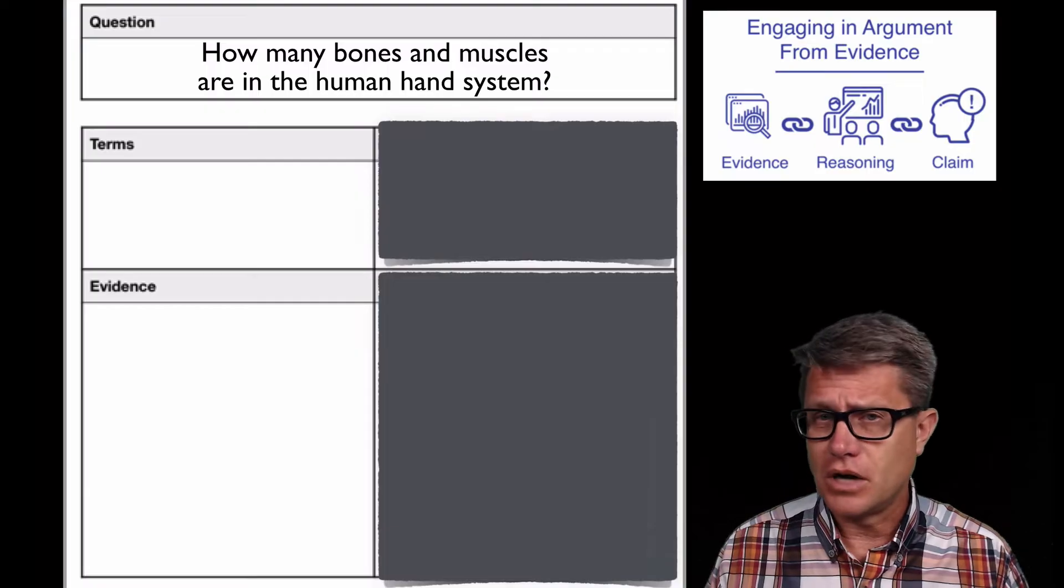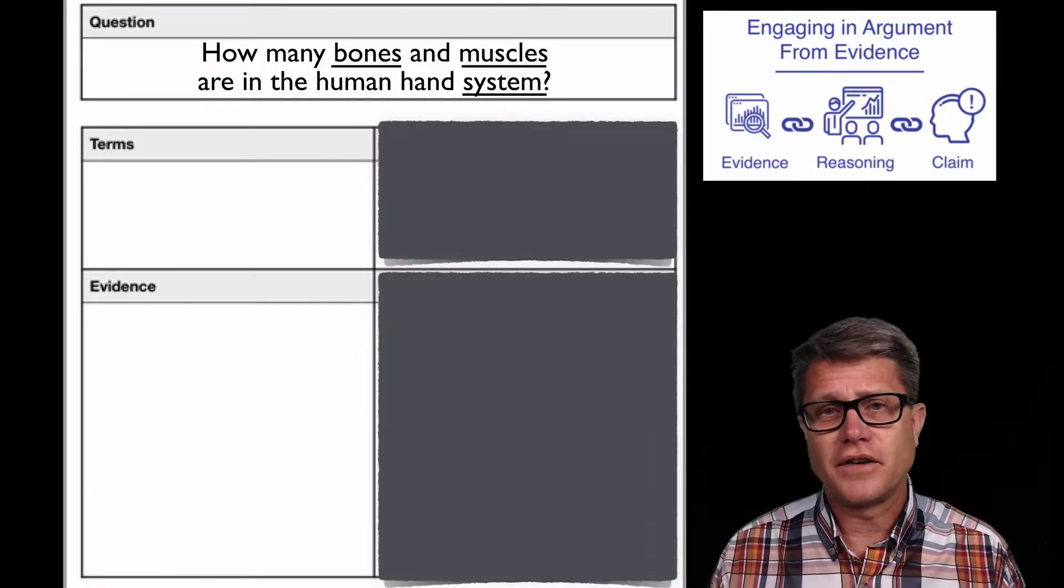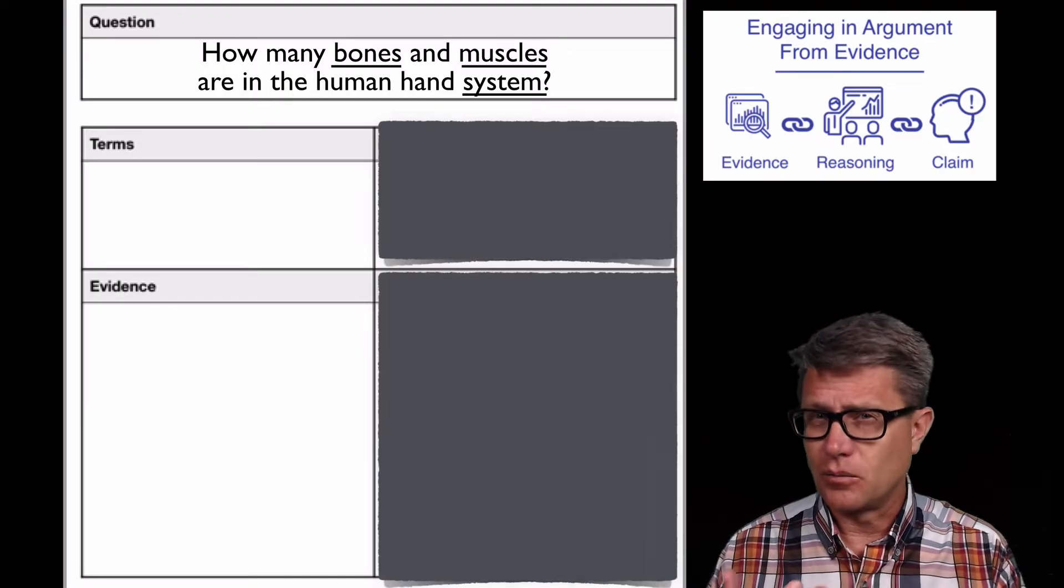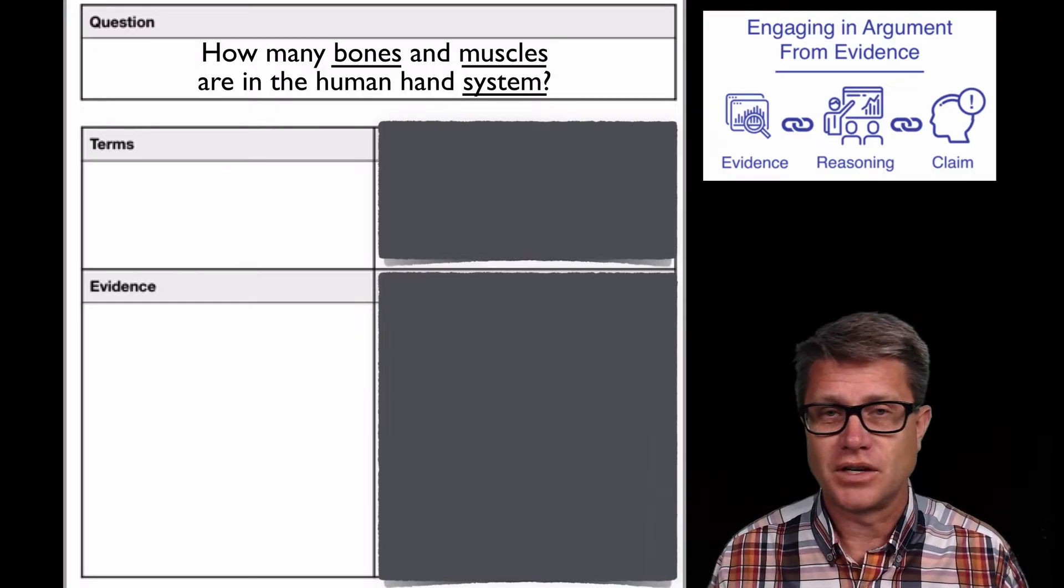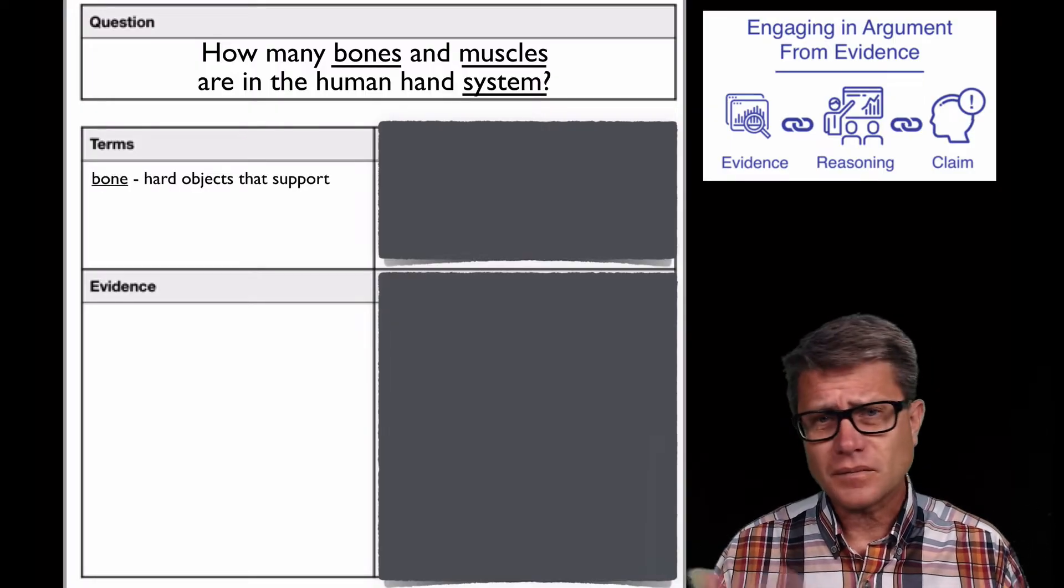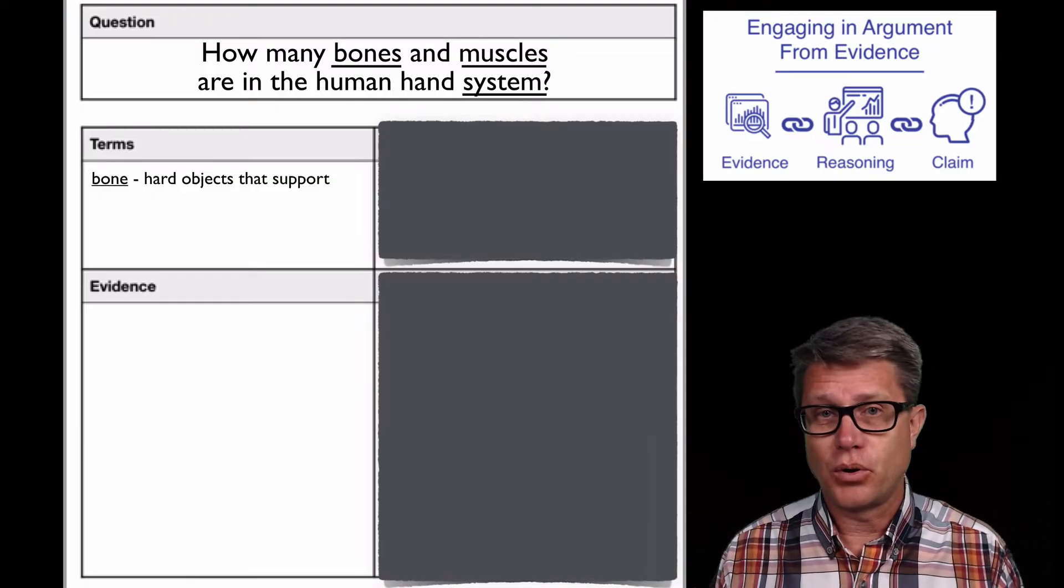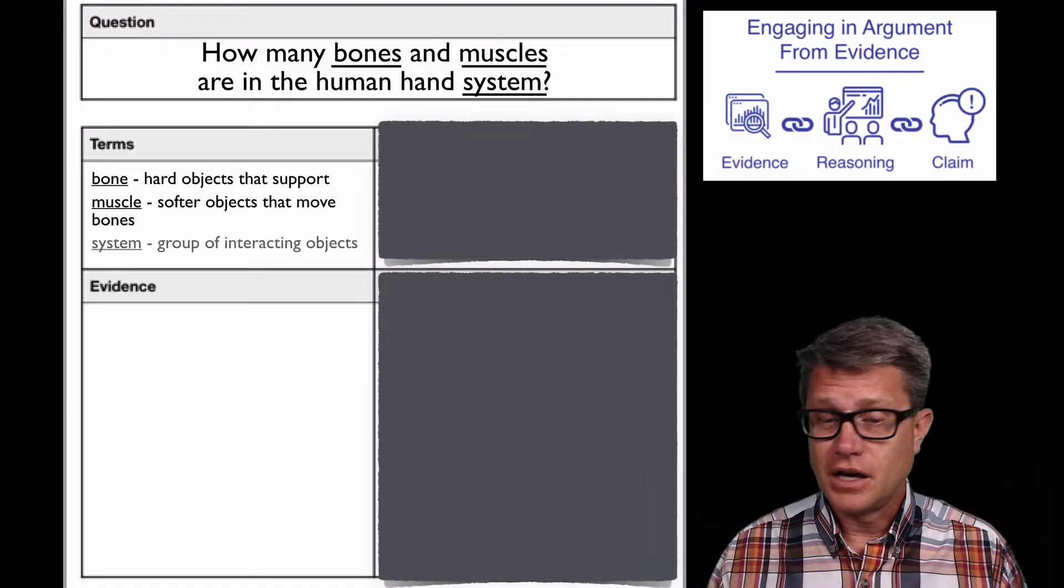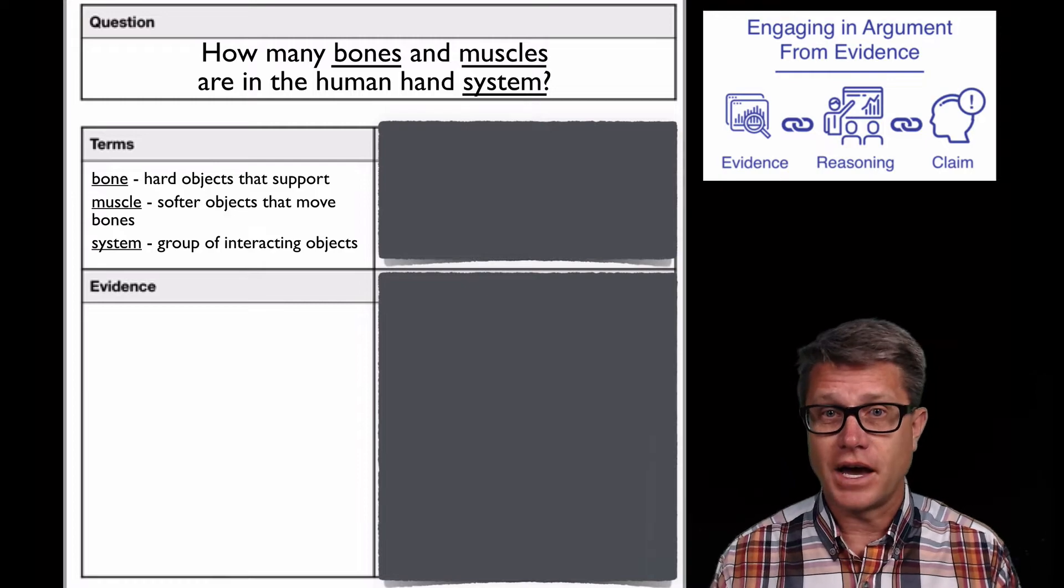The first thing I would have you do when you're ever doing argumentation is underline the terms and define operationally the terms that you're going to use in your argumentation. That will become really important especially when you get to reasoning and students will struggle with reasoning. So maybe we say as a class that bones are going to be hard objects inside the body that support, and maybe a muscle is going to be softer objects that move the bones around. And maybe we'll define a system as a group of interacting objects.